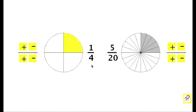In fact there are lots and lots of fractions equivalent to a quarter. But all of them share this property which is that the number at the top, the numerator, is a quarter of the number at the bottom, the denominator.